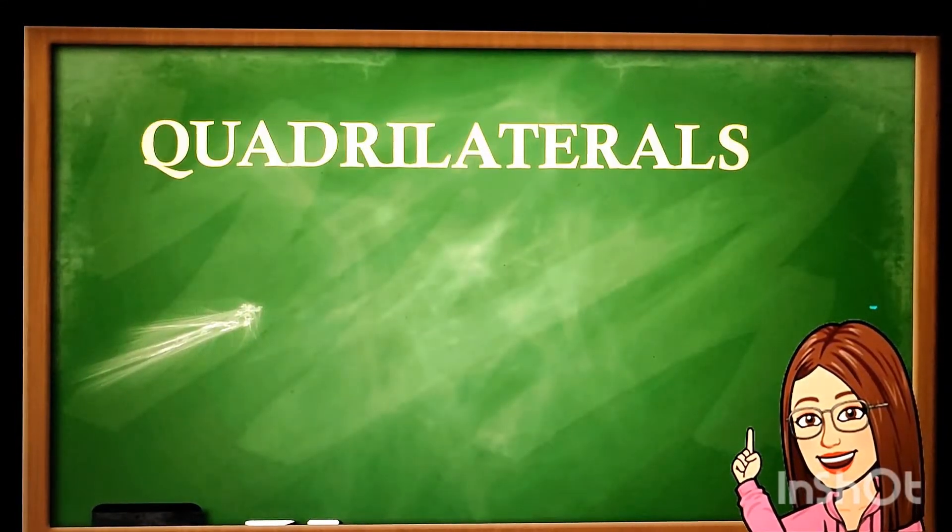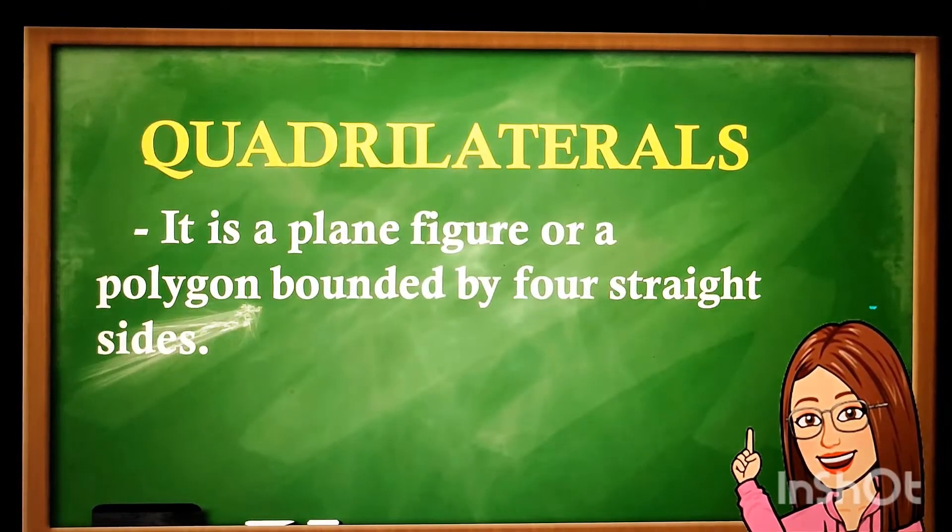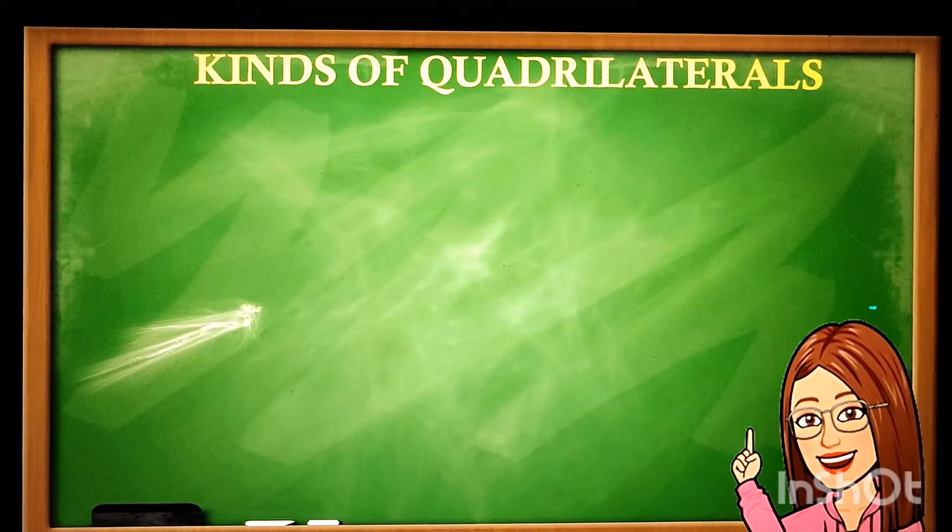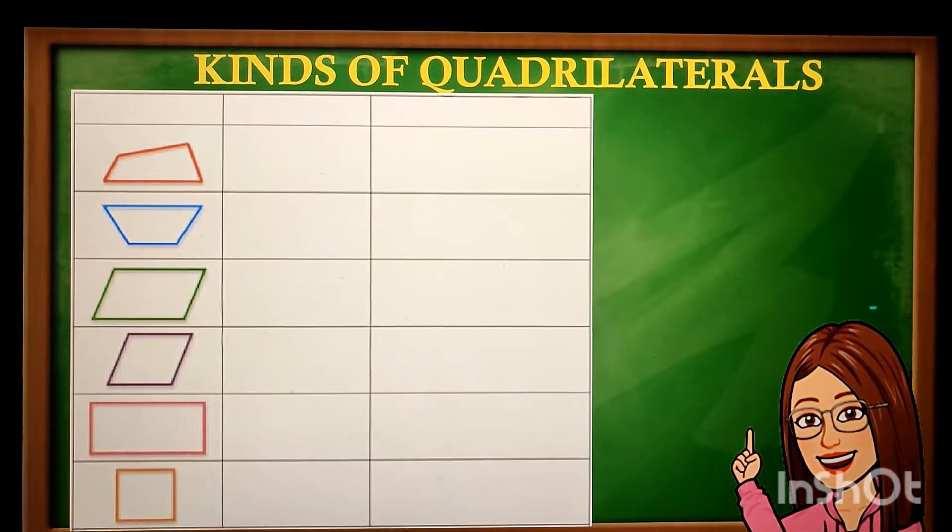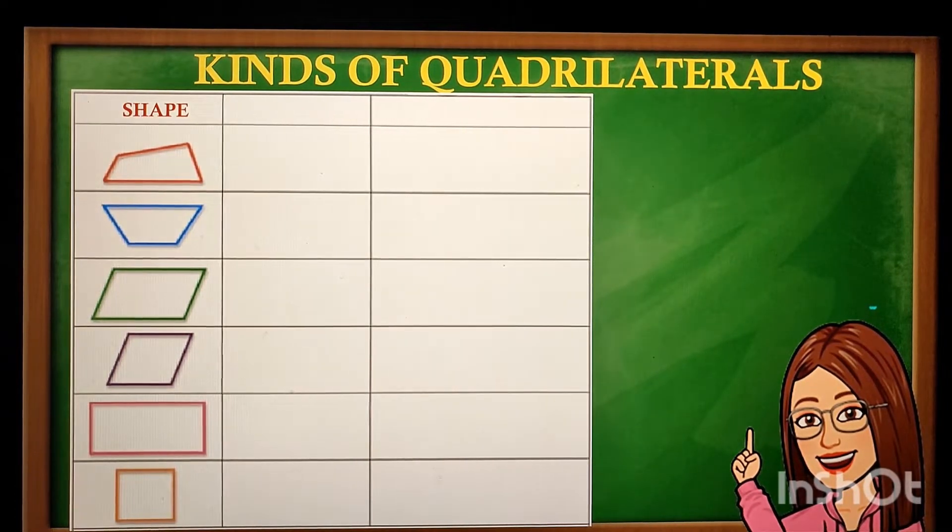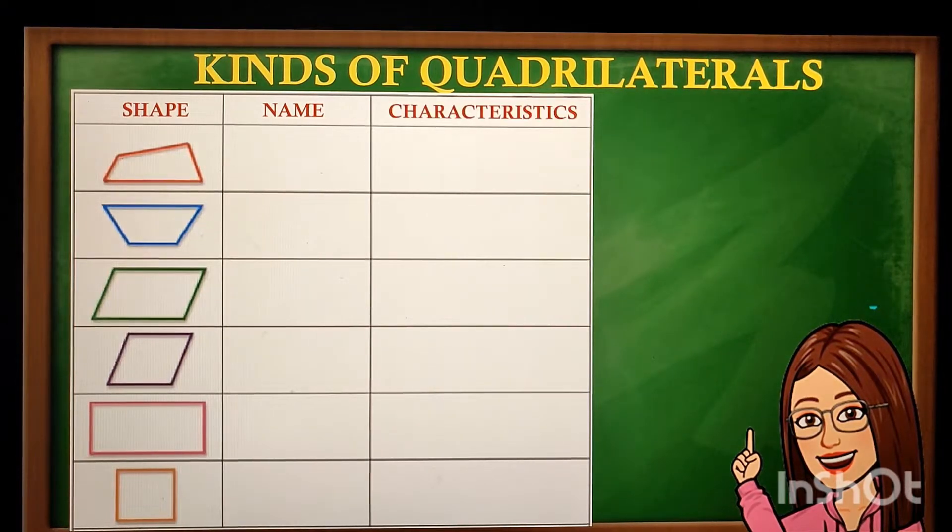Let's proceed to quadrilaterals. Quadrilaterals are plane figures or polygons bounded by four straight sides. These are the kinds of quadrilaterals. We have here the shape. We are going to identify the name and the characteristics.